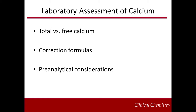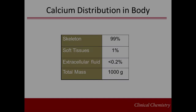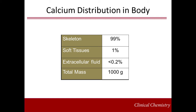Calcium is an essential mineral required for a number of physiological processes, including muscle contraction, cell division, and signal transduction. The vast majority of calcium is found within the skeleton where it serves a key structural role. Approximately 1% of calcium is found in soft tissues, and only a small fraction is found in the extracellular fluid. It is from this small pool that blood samples are drawn to assess calcium balance clinically.